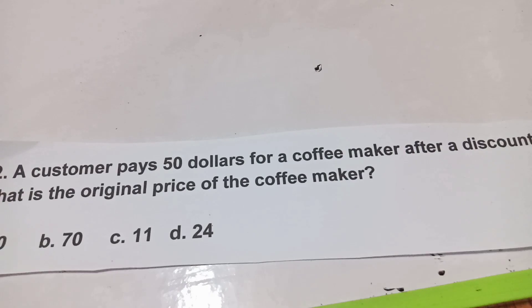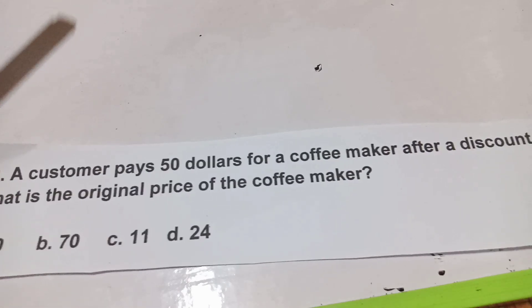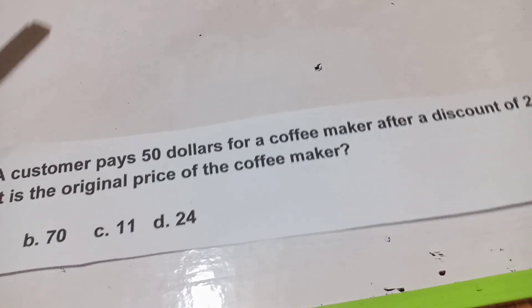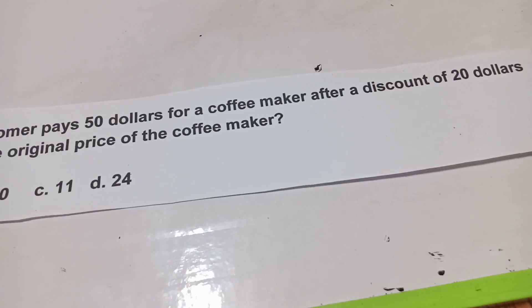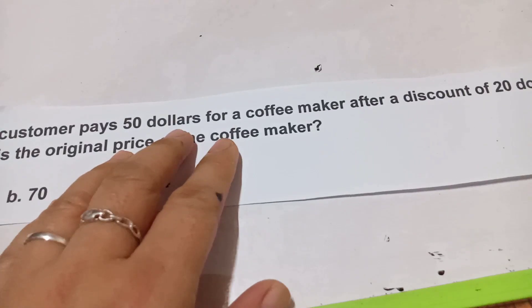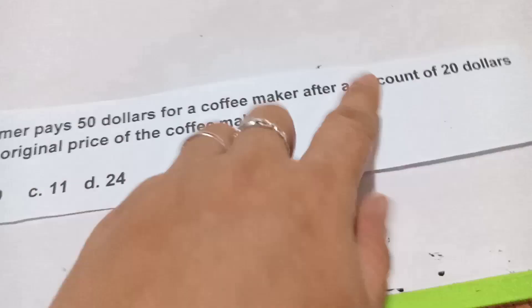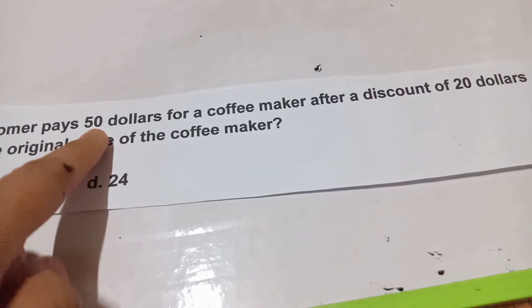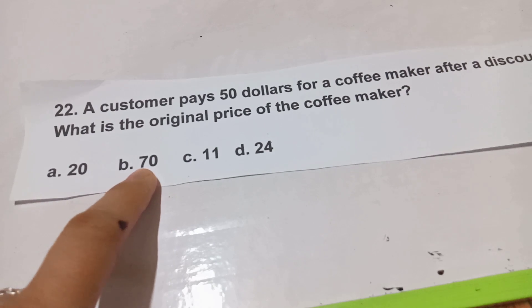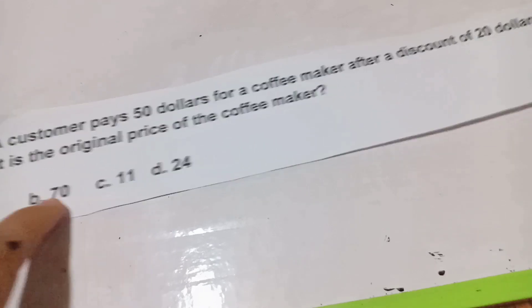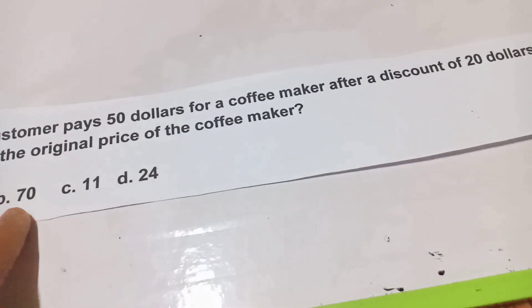Question number 22: A customer pays $50 for a copy maker after a discount of $20. What is the original price? He paid $50 after the $20 discount was applied. So to find the original price, we add 20 plus 50, which equals 70. The answer is $70, letter B. Very simple — 20 plus 50 is 70.